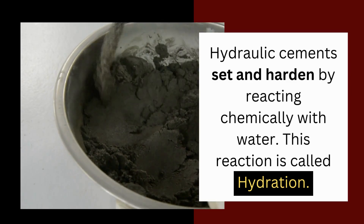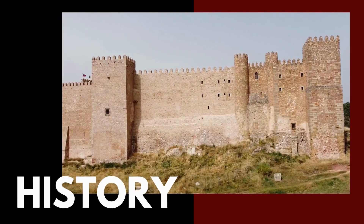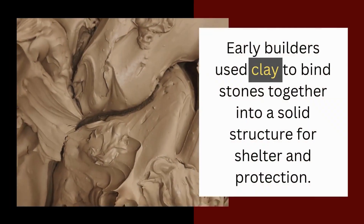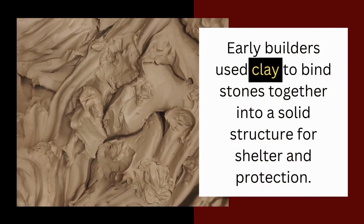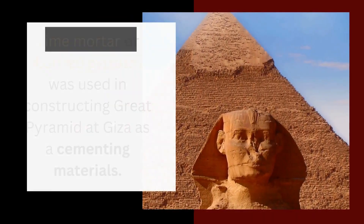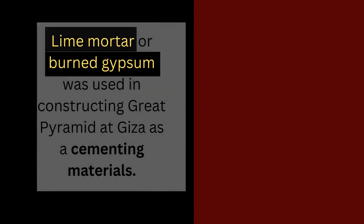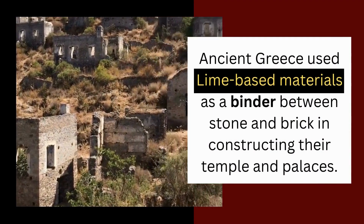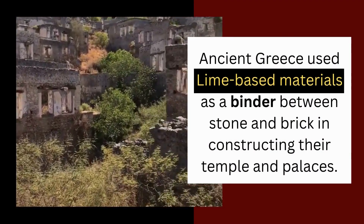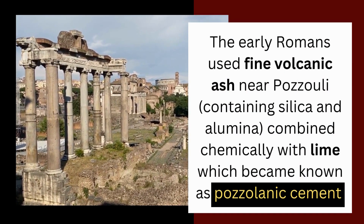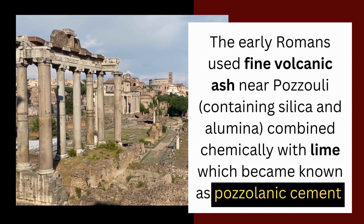Early builders used clay to bind stones together into a solid structure for shelter and protection. Lime mortar or burned gypsum was used in constructing the Great Pyramid at Giza as a cementing material. Ancient Greece used lime-based materials as a binder between stone and brick in constructing their temples and palaces. The early Romans used fine volcanic ash near Pozzuoli containing silica and alumina combined chemically with lime, which became known as pozzolanic cement.